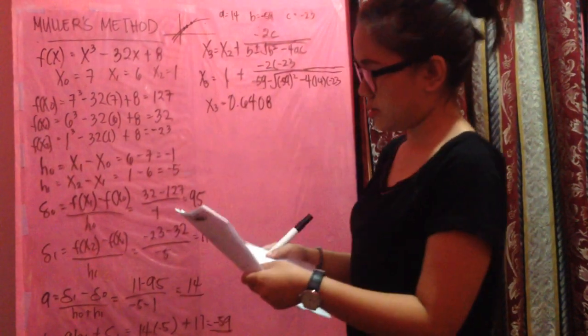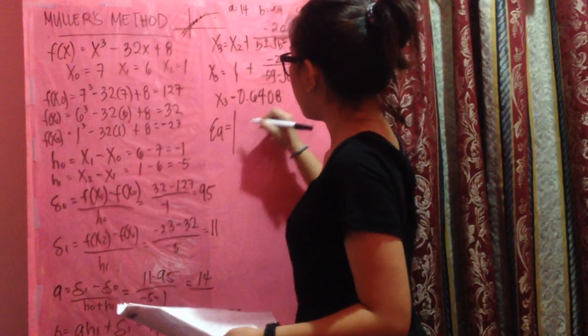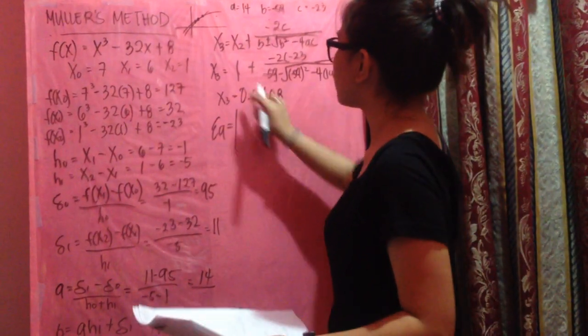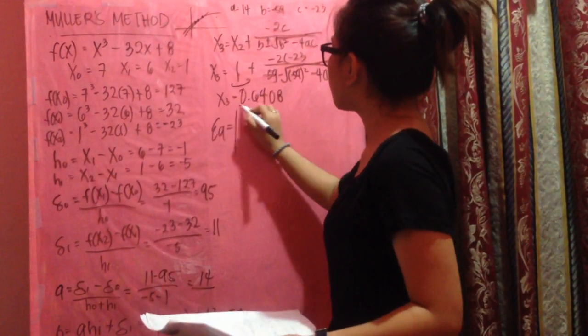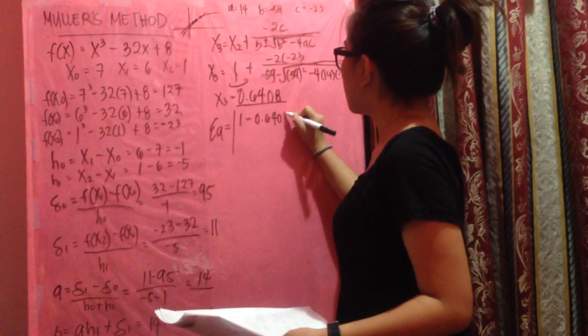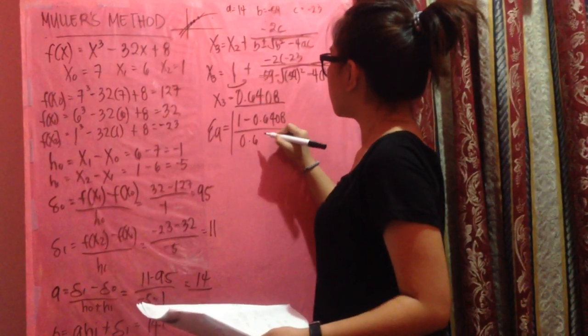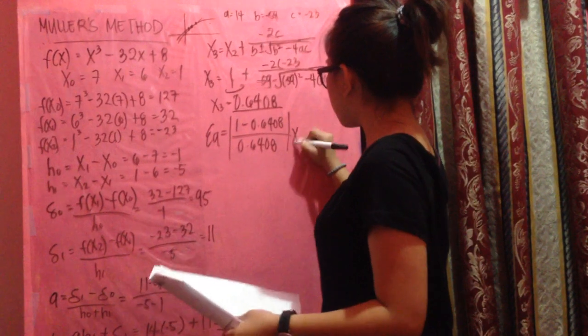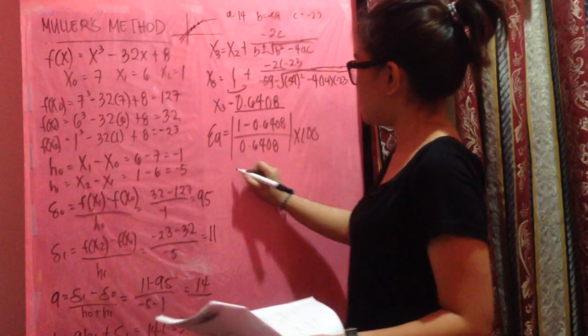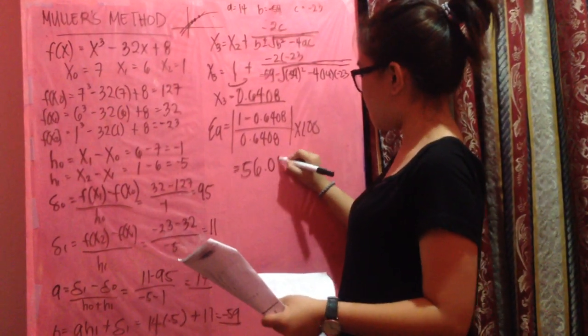For the percentage error we have past minus present over present. The past value is 1, present value is 0.6408, so 1 minus 0.6408 over 0.6408 times 100. We have 56.0549 percent away from the true values.